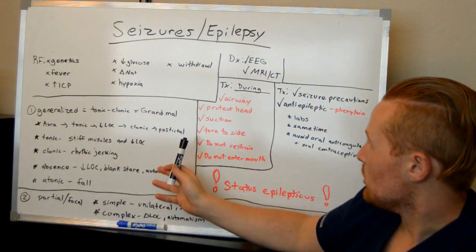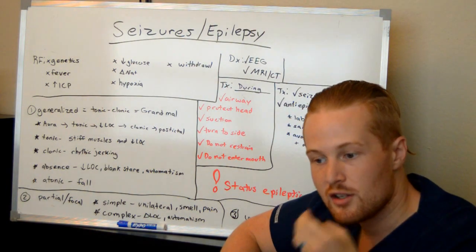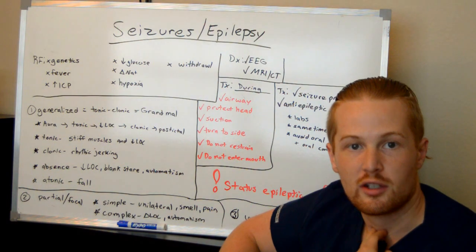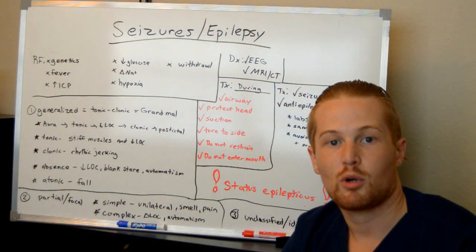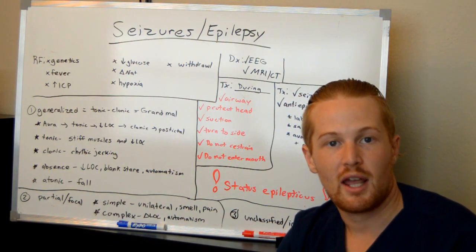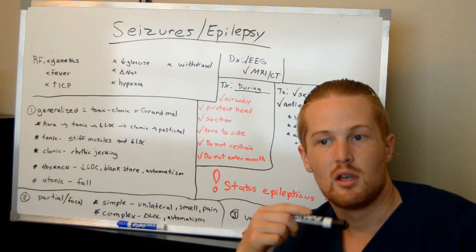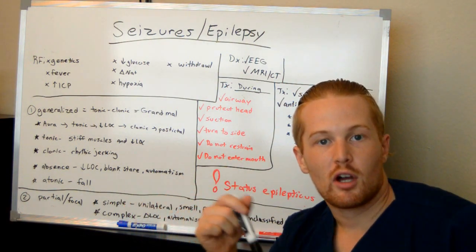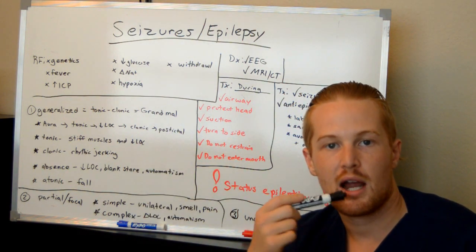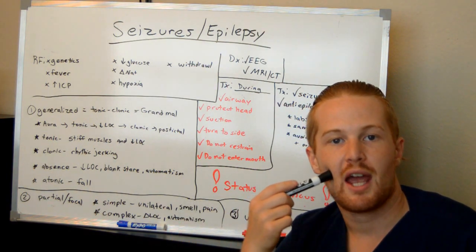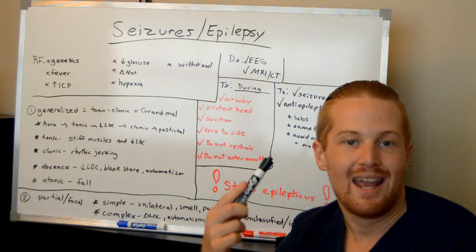If someone is having a seizure, first and foremost protect their airway — turn them on their side so that if they vomit or drool, it doesn't get into their lungs. Second, protect the patient: get them as low as possible, protect their head. Do not restrain them — their muscles are uncontrollable and they could break their own bones. You can suction around the mouth, but don't put anything inside their mouth, because they could bite down and aspirate broken pieces into their lungs.